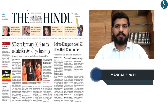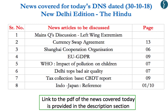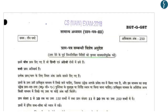Hello and welcome to Daily News Simplified - the why, what and how of newspaper reading. Today we will discuss articles from the daily edition of The Hindu newspaper dated 30th October 2018. The timestamping has been provided in the description box below, so let us start our discussion for the day.